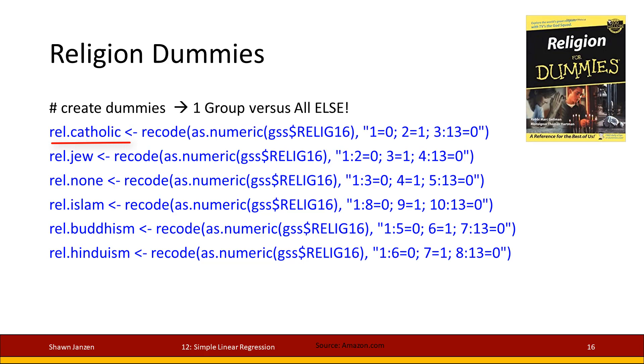In the top one, if I look at Catholics, I'm calling it a new variable rel.catholic. I'm using the recode function again, turning rel.c16 into a number value so I can draw upon its number level for codes. Using the numbers will be so much faster. I'm saying if we have code value 1, it becomes 0; 2 was the code value for Christian, so that becomes 1; 3 to 13 becomes 0. And so on with our changes - then we have it for Jew, none, Islam, Buddhism, and Hinduism correspondingly.